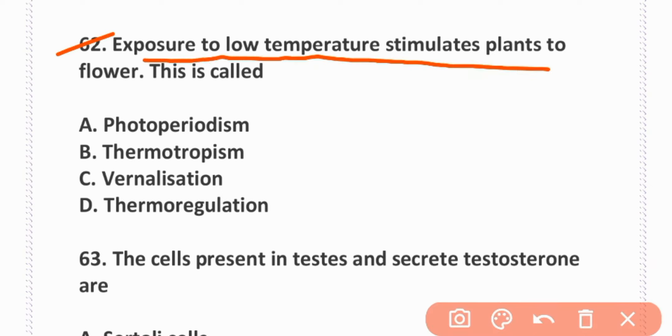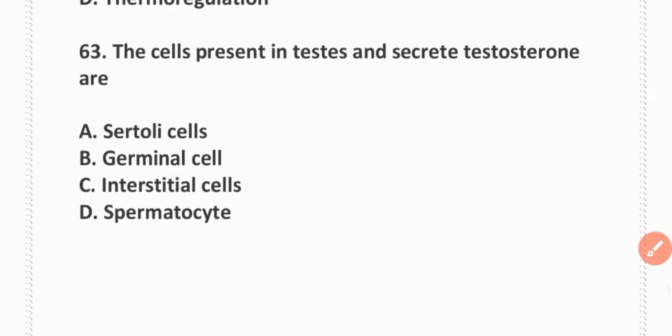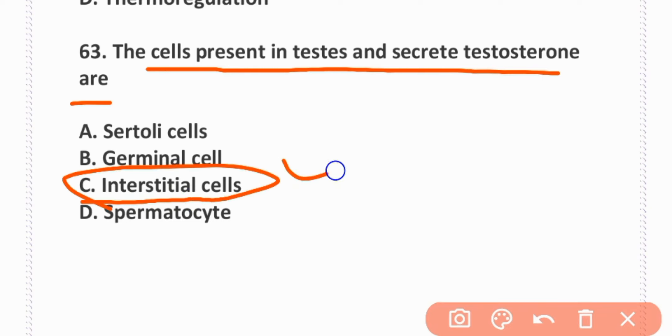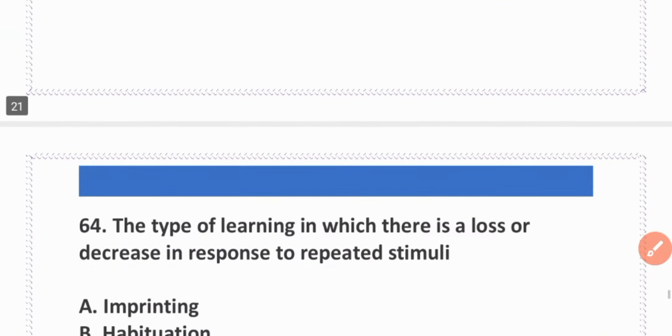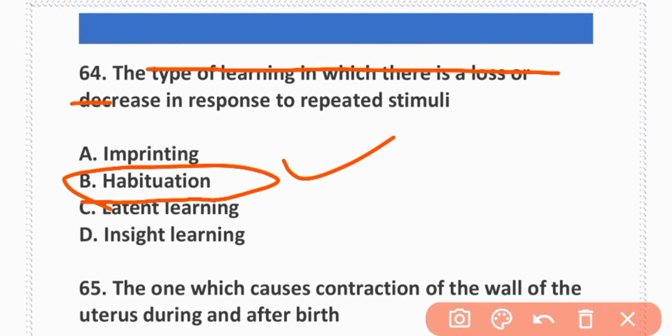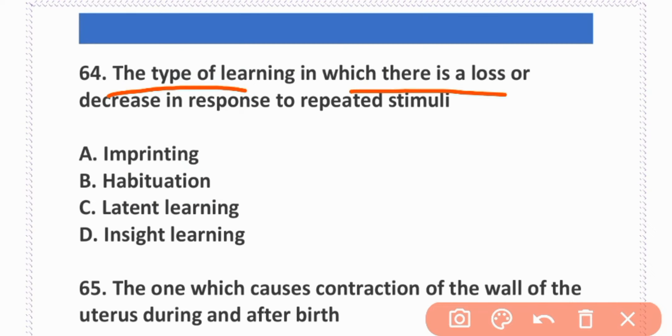Exposure to low temperatures to induce the plant to flower is called vernalization. Option C is correct. Cells that are present in the testis and secrete testosterone are called interstitial cells. The type of learning in which there is a loss or decrease in response to repeated stimuli is called habituation. Option B is correct.